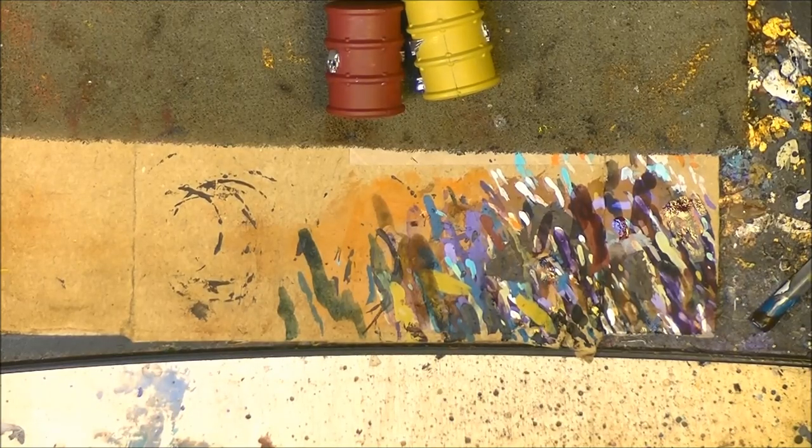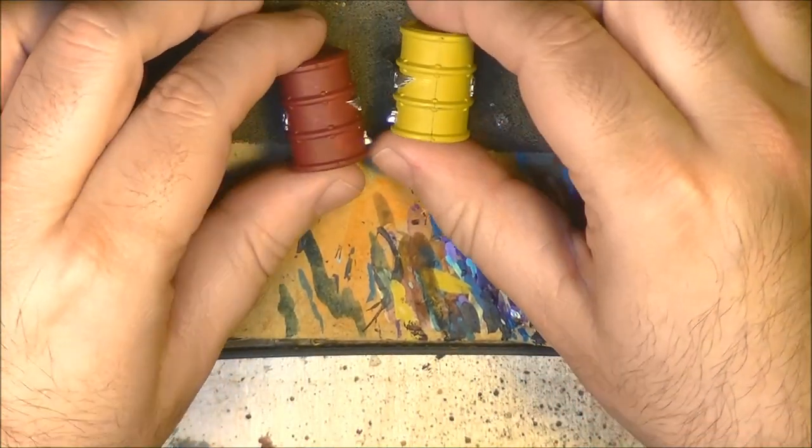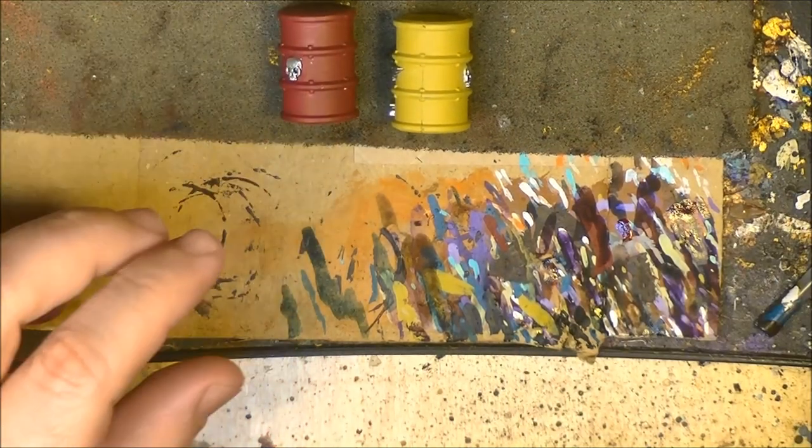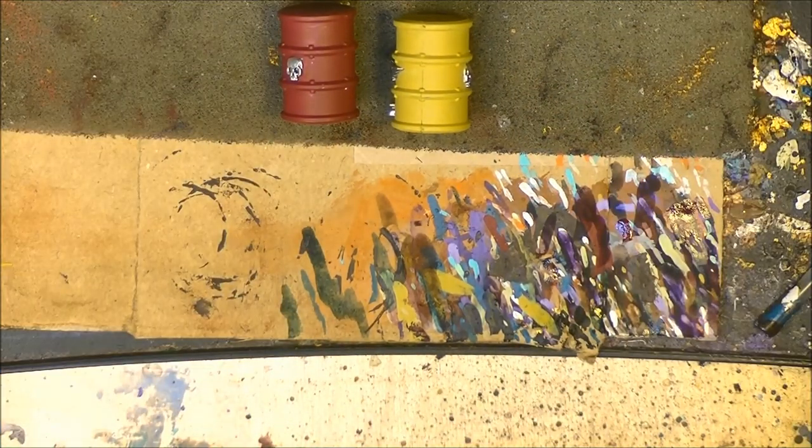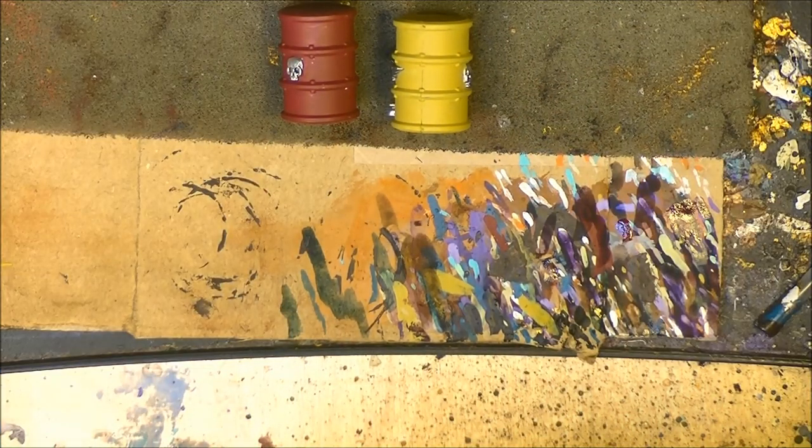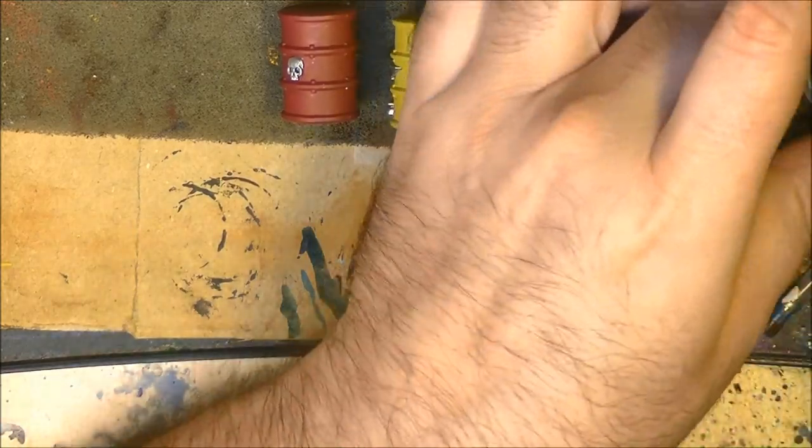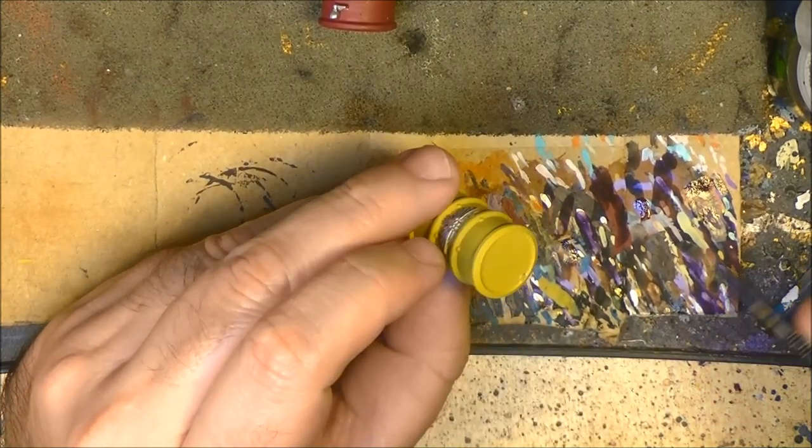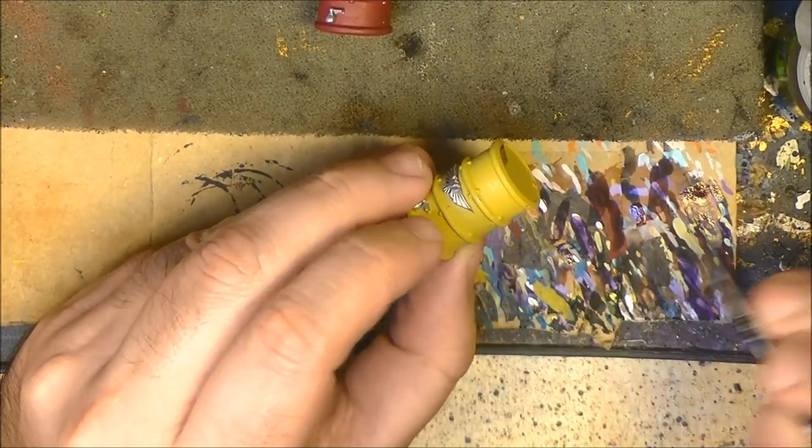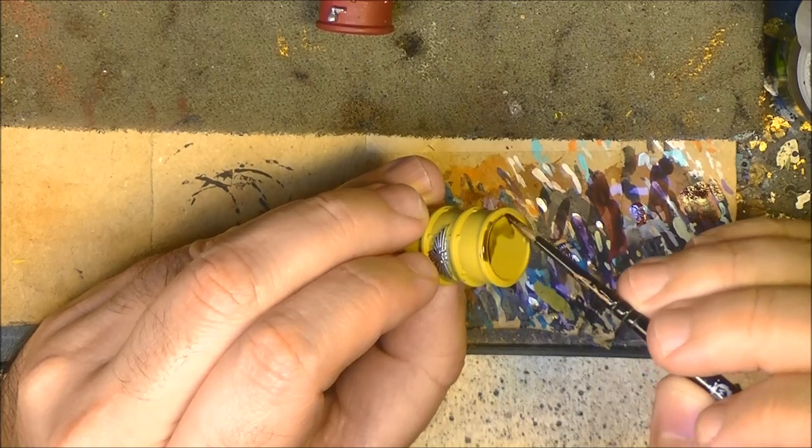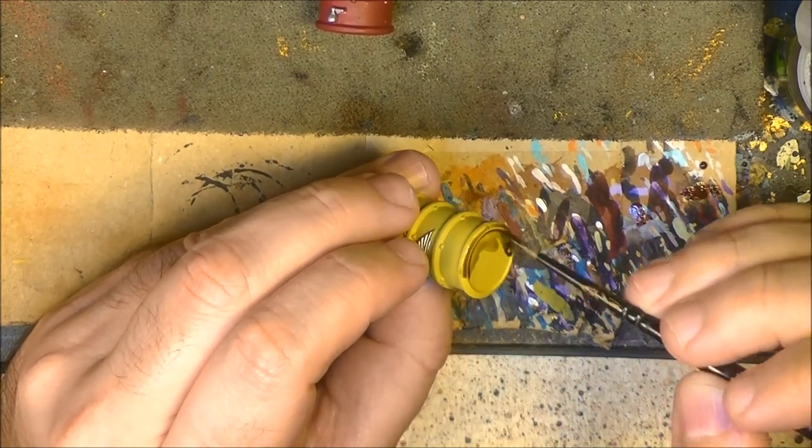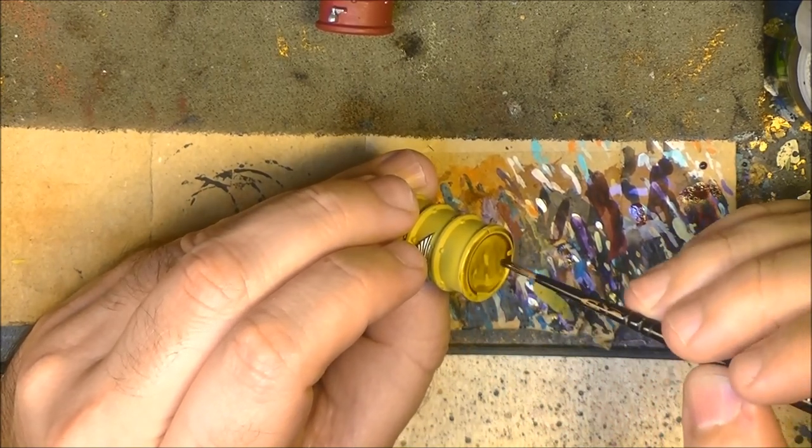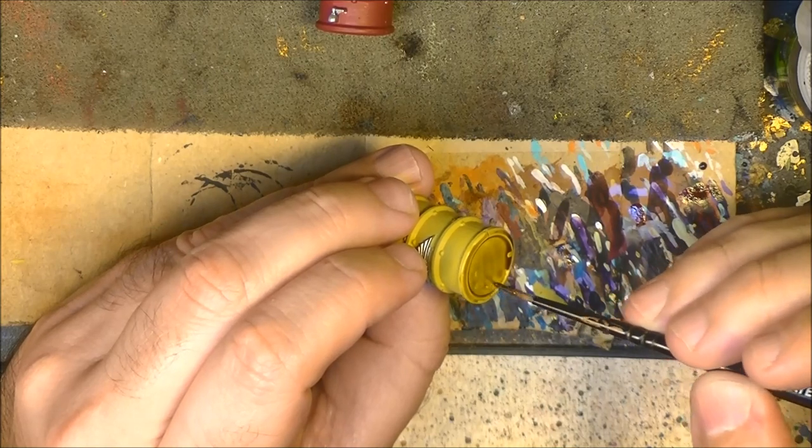Once we have the base color applied, we're going to wash with Agrax Earthshade in both cases. What I do is I do the first two thirds up to here, so I'll do one on camera and the rest will be done in the same way off camera.